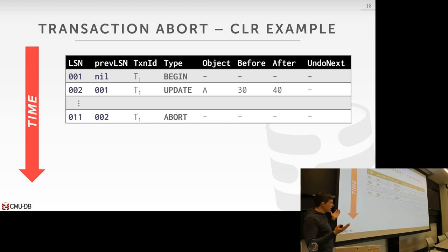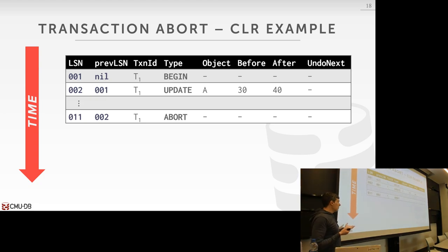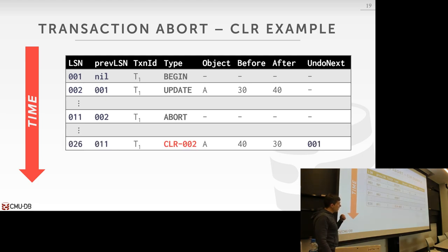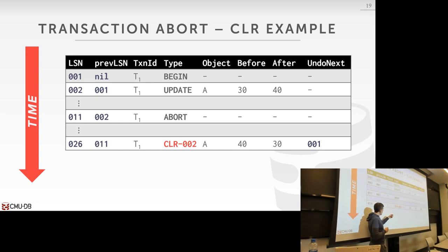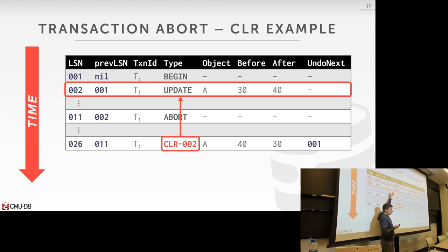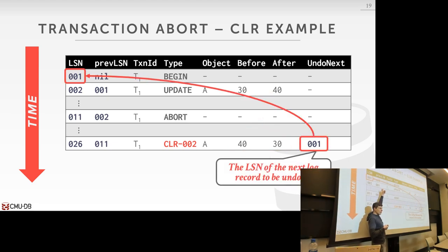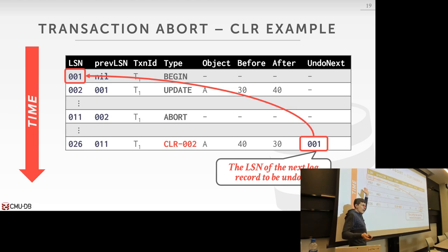Let's look at an example of CLRs. We have one transaction T1 — it just does an update on A, and then it aborts. Now when we want to start undoing its change during regular execution time — not during recovery — we're going to create a CLR entry that's going to be tied to the update that it did. It looks exactly like the first one, just the before and after values are reversed: before the value was 30, and after the update was 40, so now in our reversal we're setting the old value back to 30. Then we have this undoNext LSN record that says what's the next thing we need to undo to completely reverse this transaction. In this particular example, the undo LSN goes to the begin statement, so we know there's nothing else for us to reverse. We can go ahead and add our transaction end record.